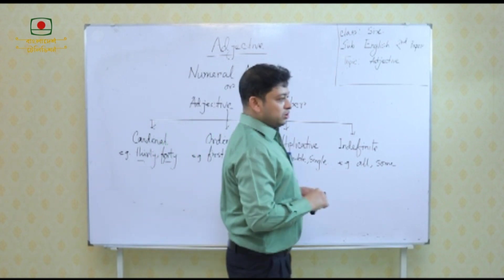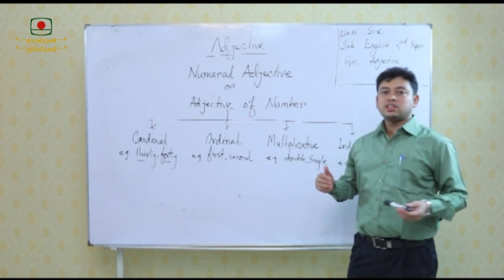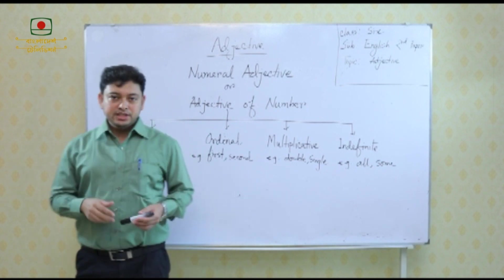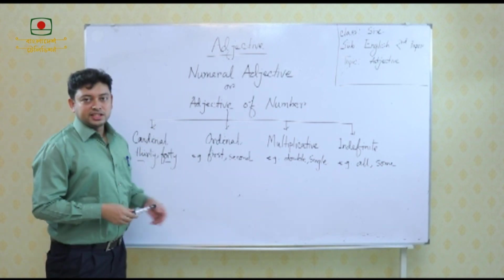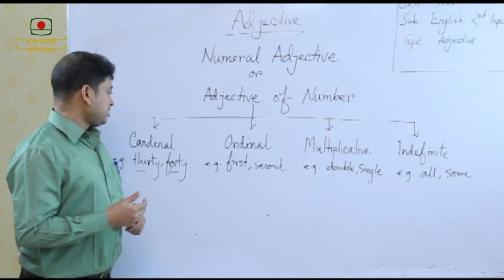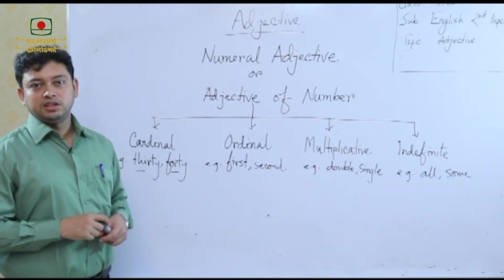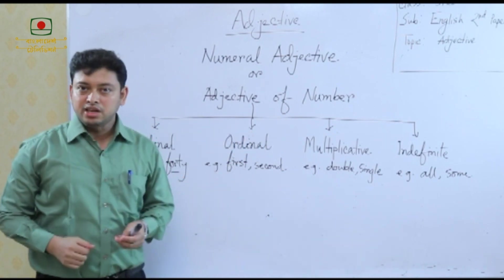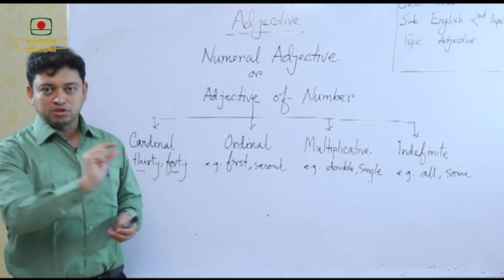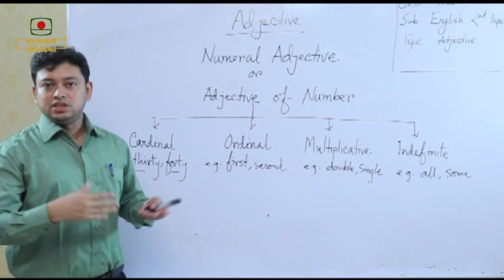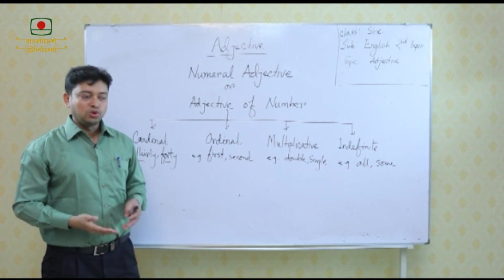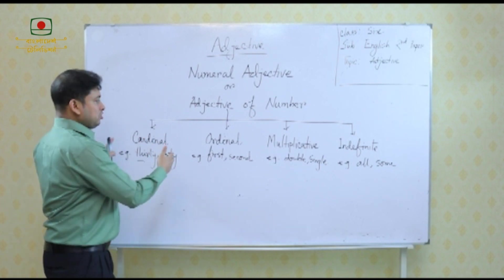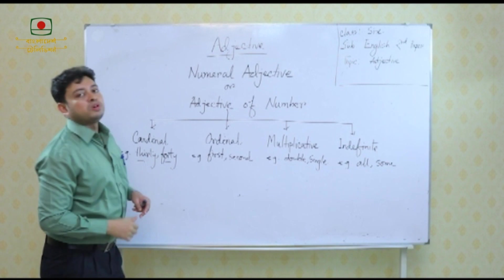Students often get confused about what name to write. It is simple: if you write 'cardinal numeral adjective', the answer is correct; if you write 'adjective of number', the answer is also correct. The same applies for ordinal, multiplicative, or indefinite — if you simply identify it as adjective of number or numeral adjective, your answer is correct. For better understanding, however, knowing the sub-types in detail is recommended.